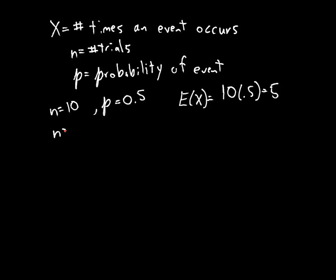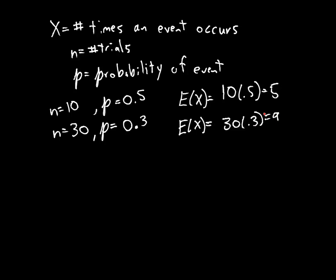If we had 30 trials and the probability of the event were 0.3, then we expect about 30% of the trials to result in the event. So we expect the number of occurrences of the event to be 30 times 0.3, which is 9. In general, that's going to be our expectation for a binomial random variable: n times p, the number of trials times the probability of the event in each trial.